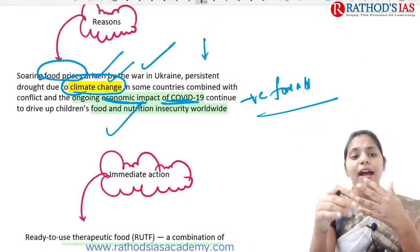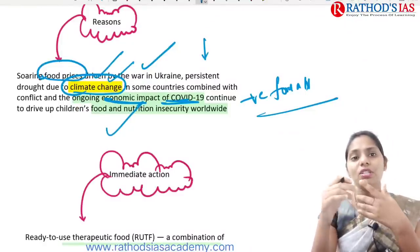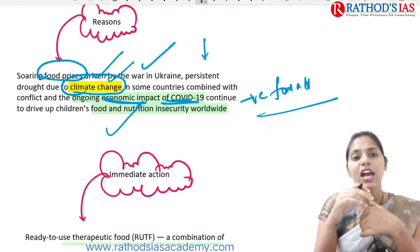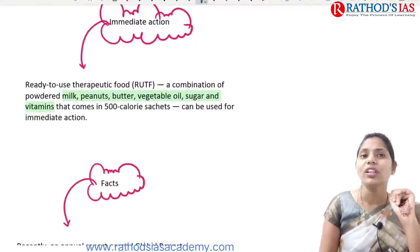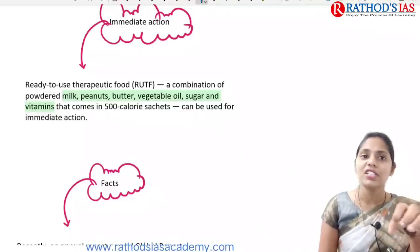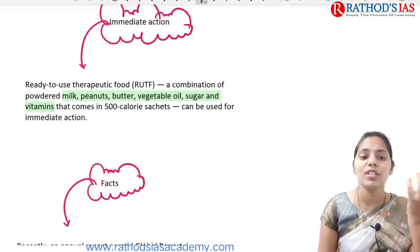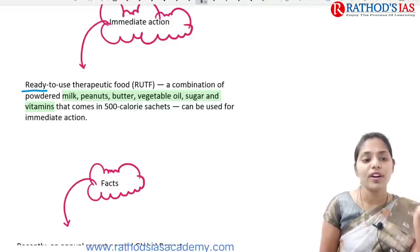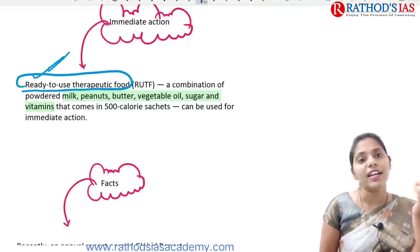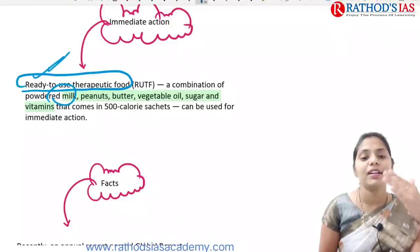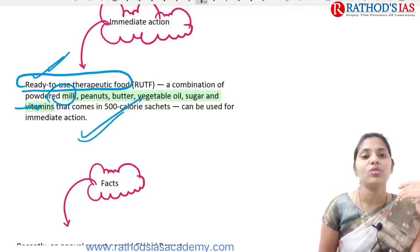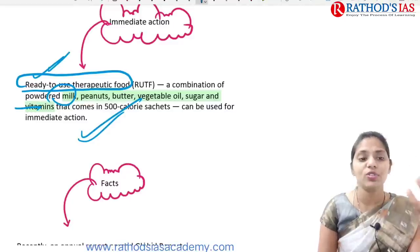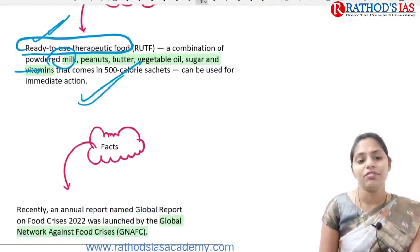Immediate actions that can be taken include ready-to-use therapeutic food, which mainly contains milk powder, peanut butter, vegetable oil, sugar, and vitamins. This ready-to-use therapeutic food is for immediate action.